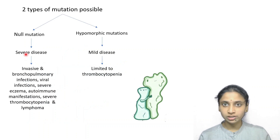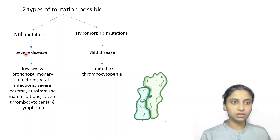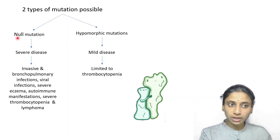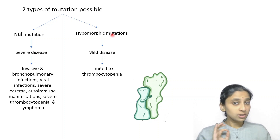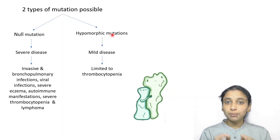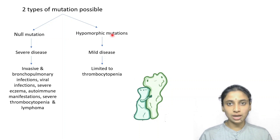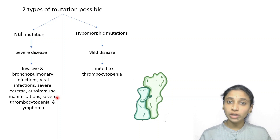Regarding types of mutations — although questions are not frequently asked on this — there are two types: null mutations and hypomorphic mutations. With null mutations, the disease is severe. With hypomorphic mutations, the disease is mild, with symptoms limited to thrombocytopenia. In severe disease, the person can present with invasive and bronchopulmonary infections, viral infections, severe eczema, autoimmune manifestations, severe thrombocytopenia, and also leukemia and lymphoma.